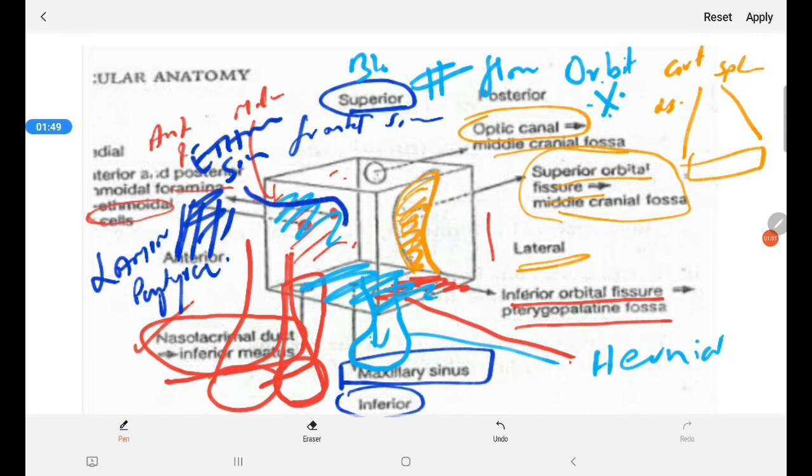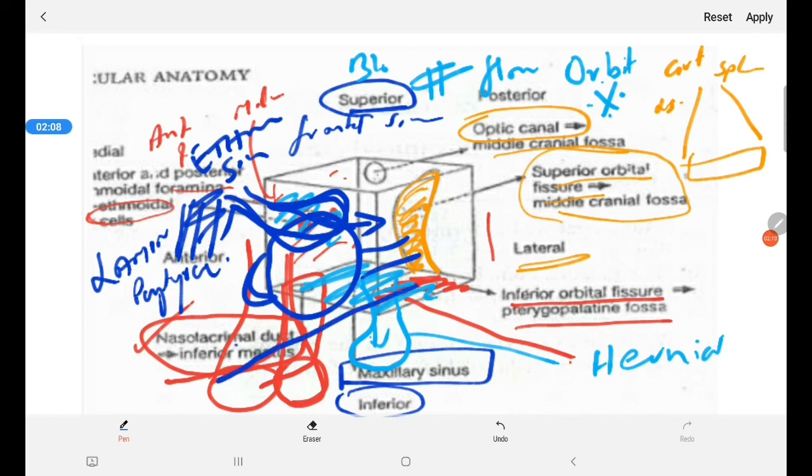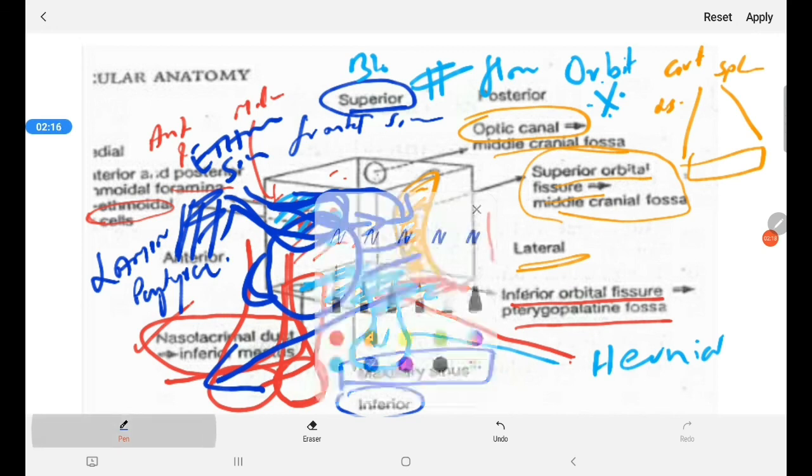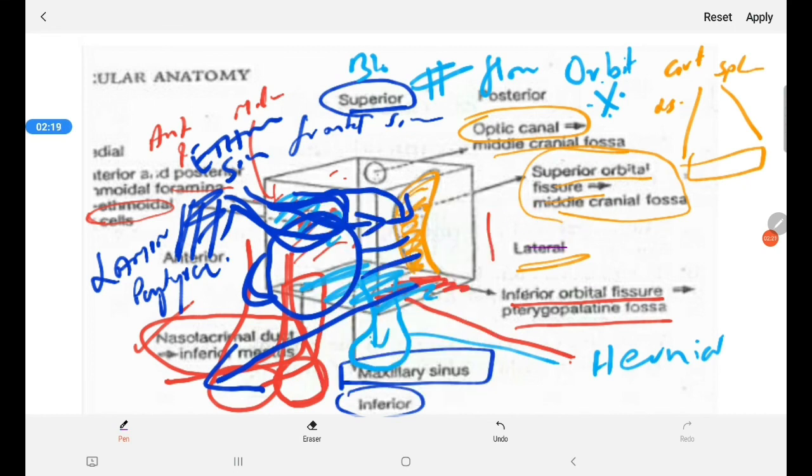If there is some mucocele associated with the ethmoid sinus, it herniates through this or it can break up the lamina papyracea and come into the orbit. Because of that, the globe that is located within the orbit goes in front. Because the mucocele is behind, the eyeball is pushed forward and we can get what is called as proptosis of the eye, which is protrusion of the eyeball anteriorly from the orbit.